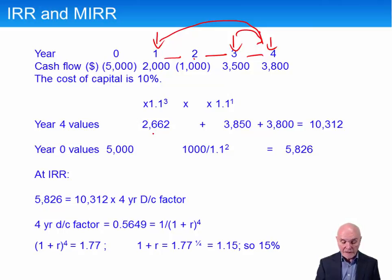The year three inflow can only be invested for one year before it gets to that. So that'll be only times 1.1. That'll come to 3850. And then the final inflow is already at time 4. It's not going to be invested at all. It is already at its terminal value. So the sum of these three inflows projected forward basically to time 4 is 10,312.